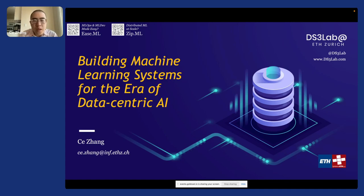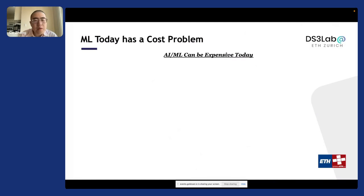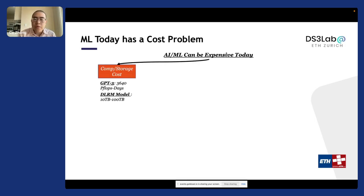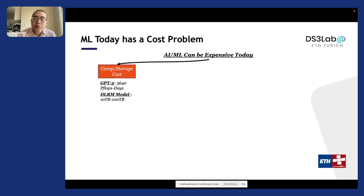One challenge we are both excited about and worried about is the observation that building machine learning and AI models today can be ridiculously expensive. The cost comes from many different directions. For some models, they simply need a lot of computation and storage. Big language models often require thousands of petaflop days, and state-of-the-art recommendation models can occupy 10 to 100 terabytes of storage.